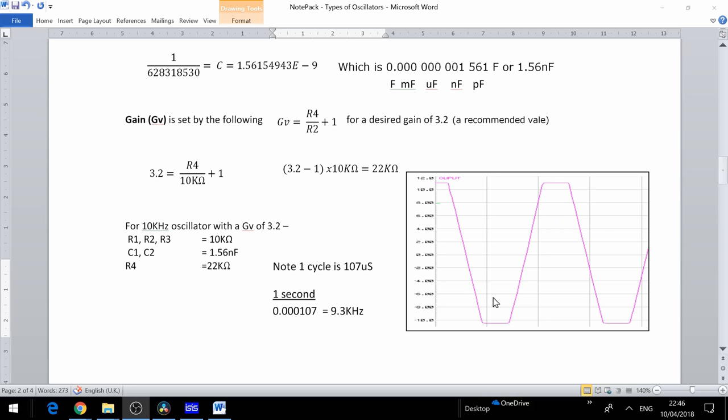After running a simulation we note that one cycle is about 107 microseconds. One second divided by 107 microseconds gives us a round value of 9.3 kilohertz.